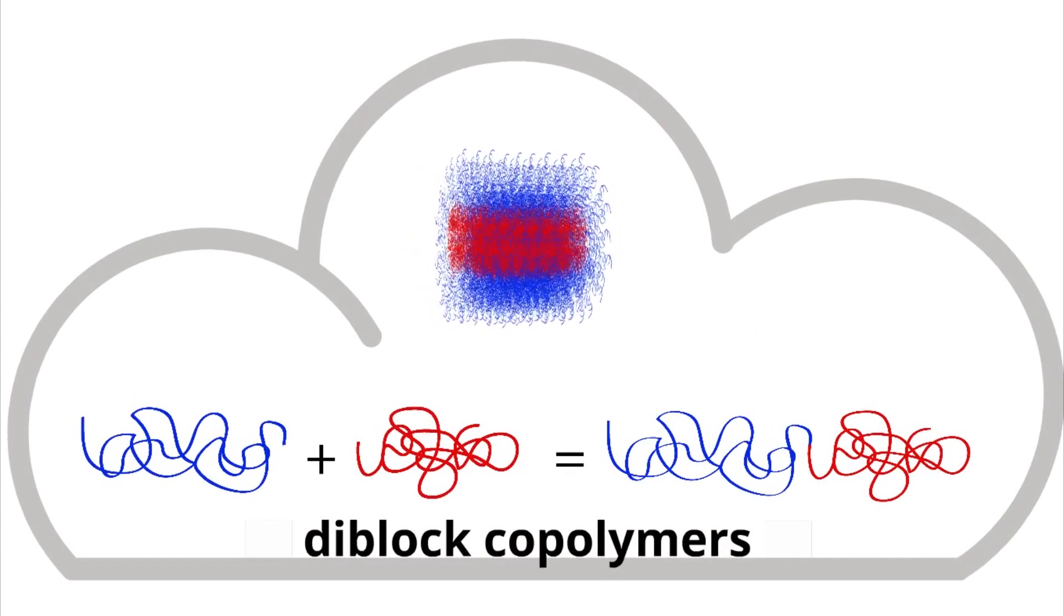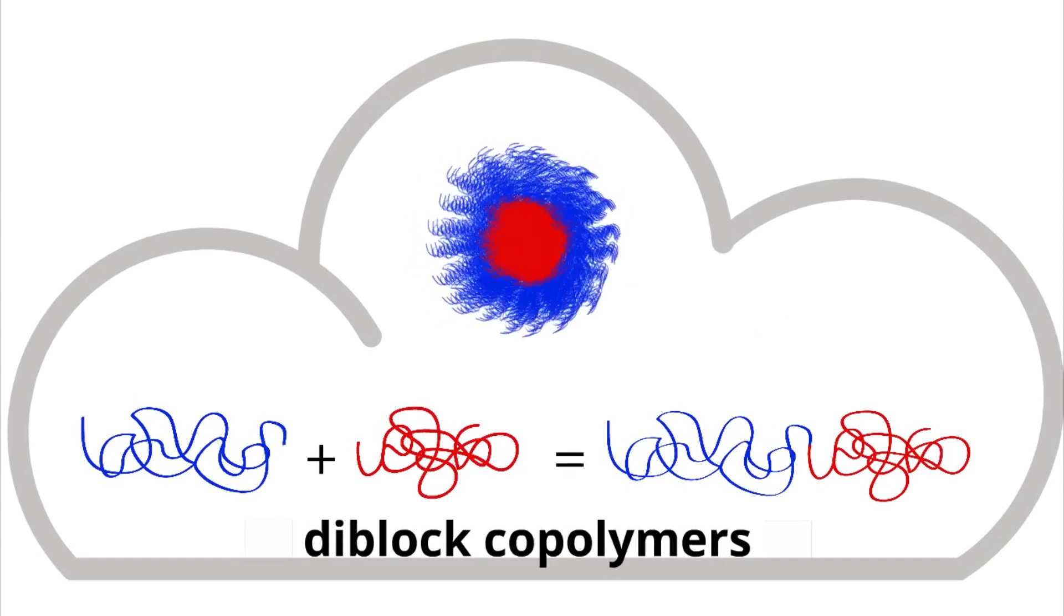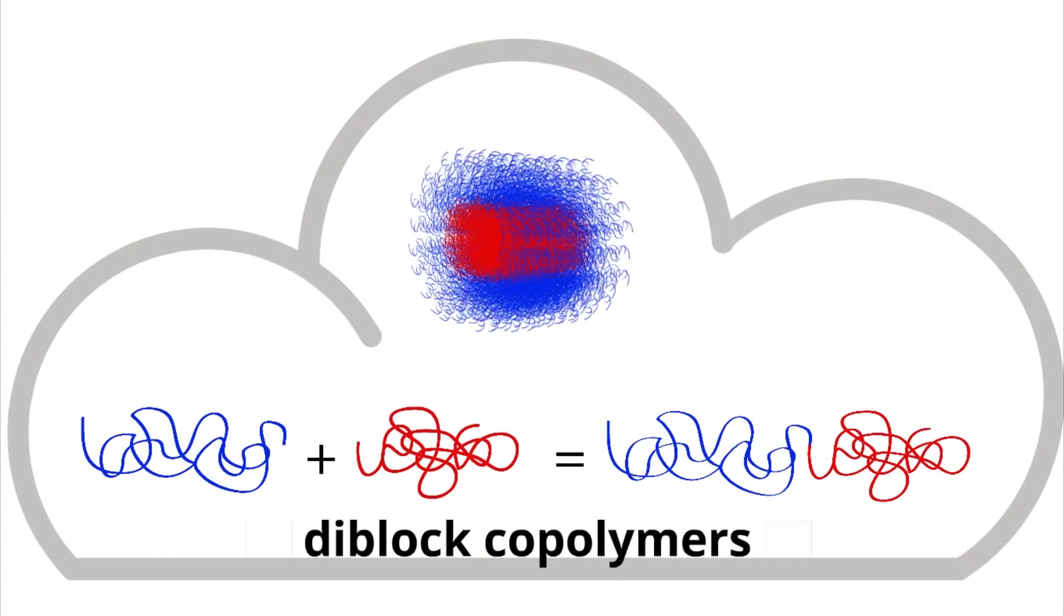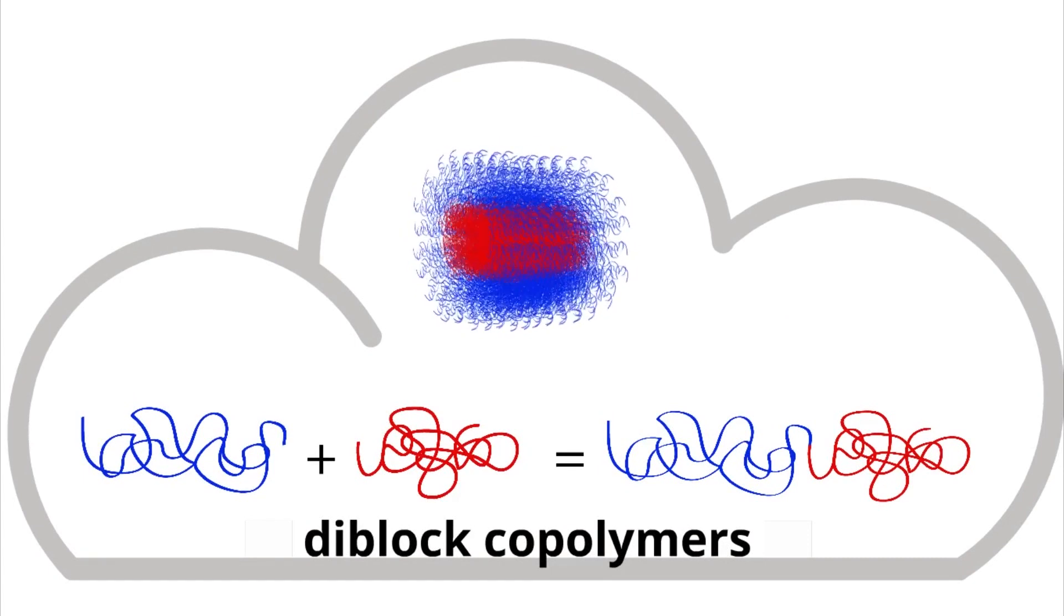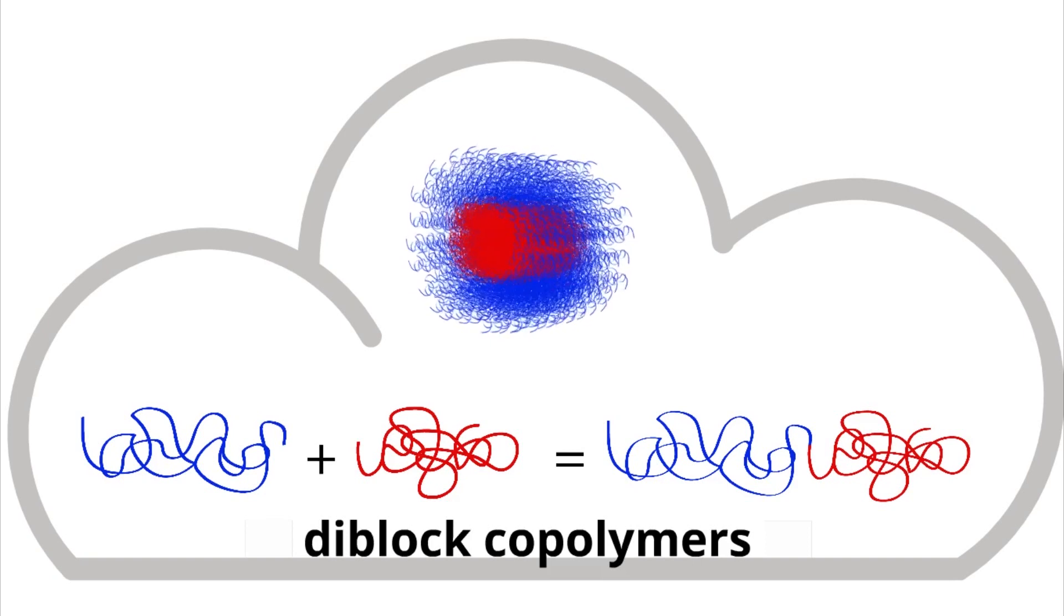We use a strategy involving diblock copolymers, which are large molecules made of two polymers that are bound together and act as chemically distinct blocks. These blocks would rather not be neighbors, so they spontaneously separate, kind of like oil and water, but on a smaller scale.